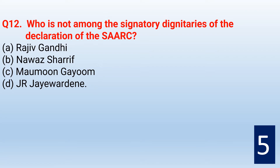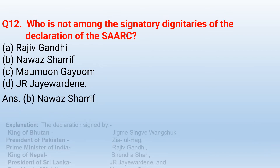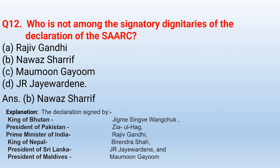Who is not among the signatory dignitaries of the declaration of SAARC? The correct option is option B — Nawaz Sharif. The signatory dignitaries were: King of Bhutan — Jigme Singye Wangchuck; President of Pakistan — Ziaul Haq; Prime Minister of India — Rajiv Gandhi; King of Nepal — Birendra Shah; President of Sri Lanka — J.R. Jayewardene; President of Maldives — Maumoon Abdul Gayoom.